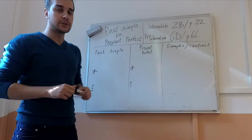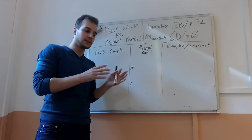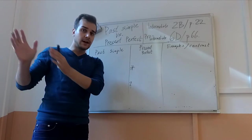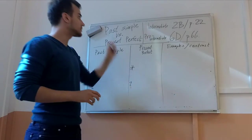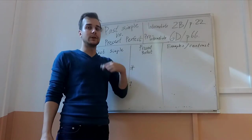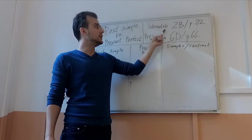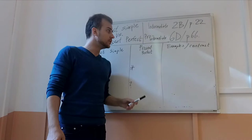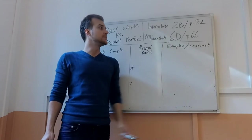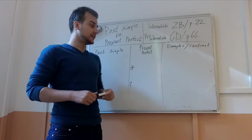In translation we could say the difference between present perfect and past simple. You can find it in your books. If you are in the third year, then it's intermediate 2B page 22. If you are in the second year, then this is pre-intermediate 6B on page 66.